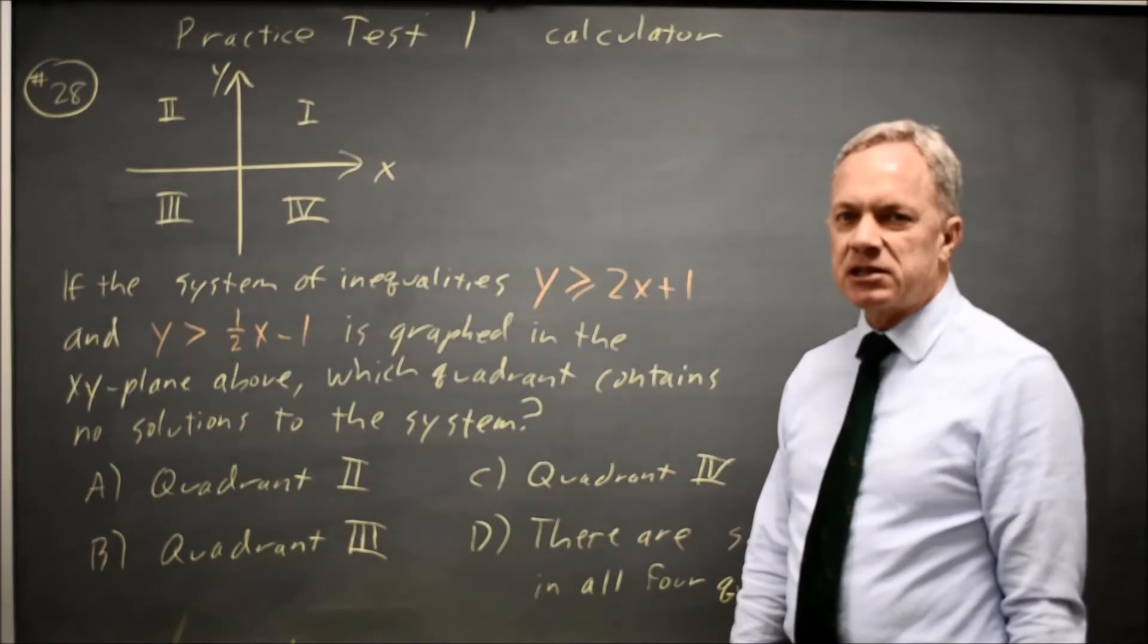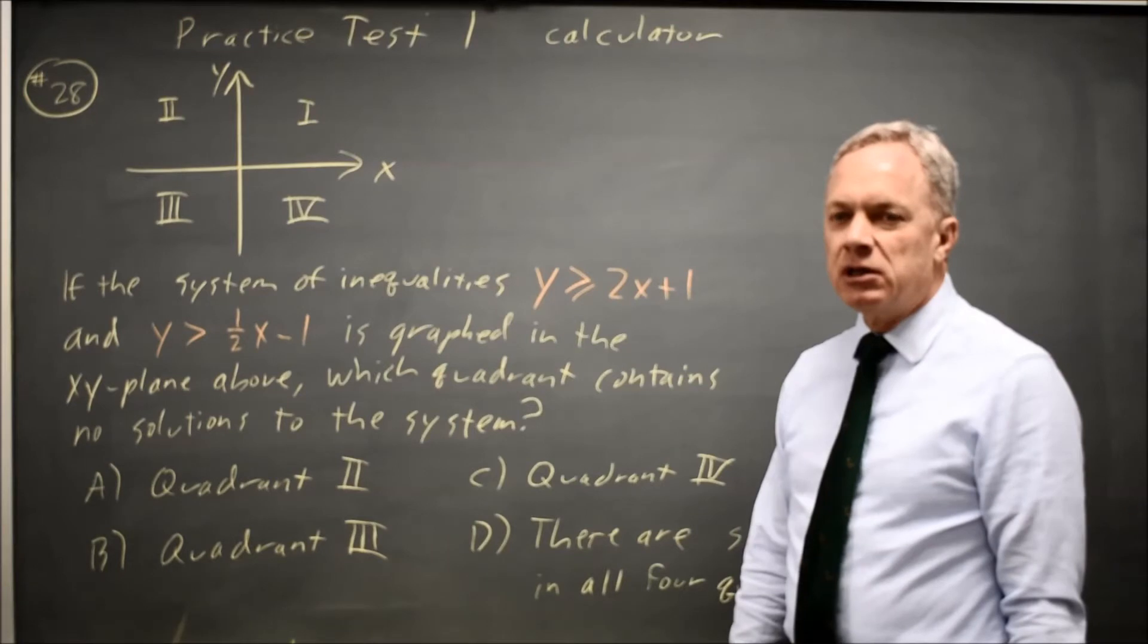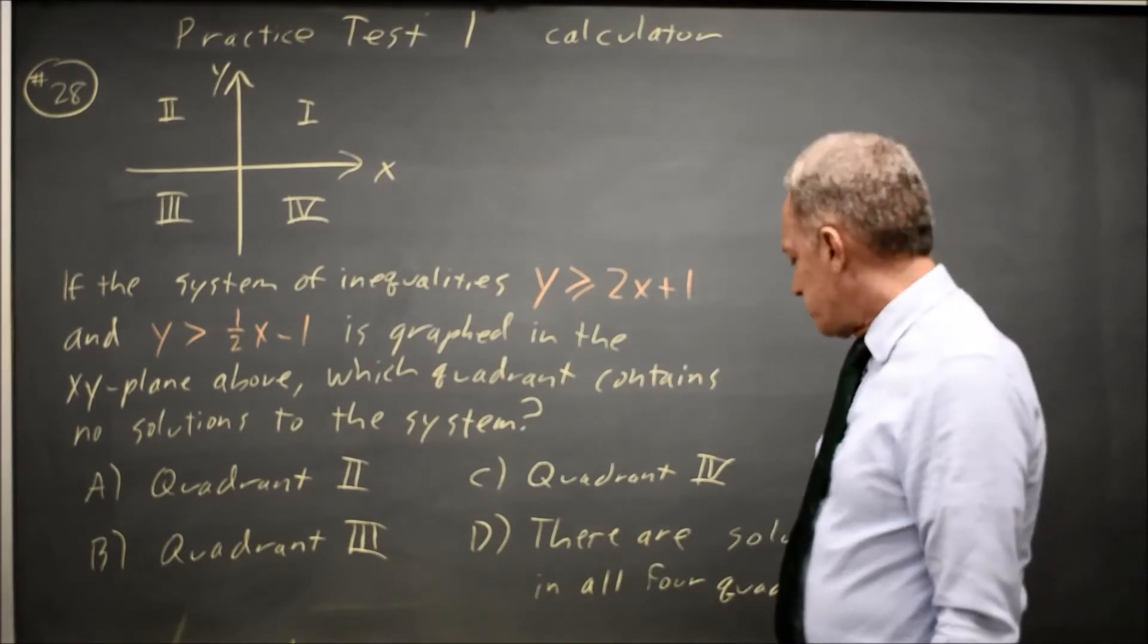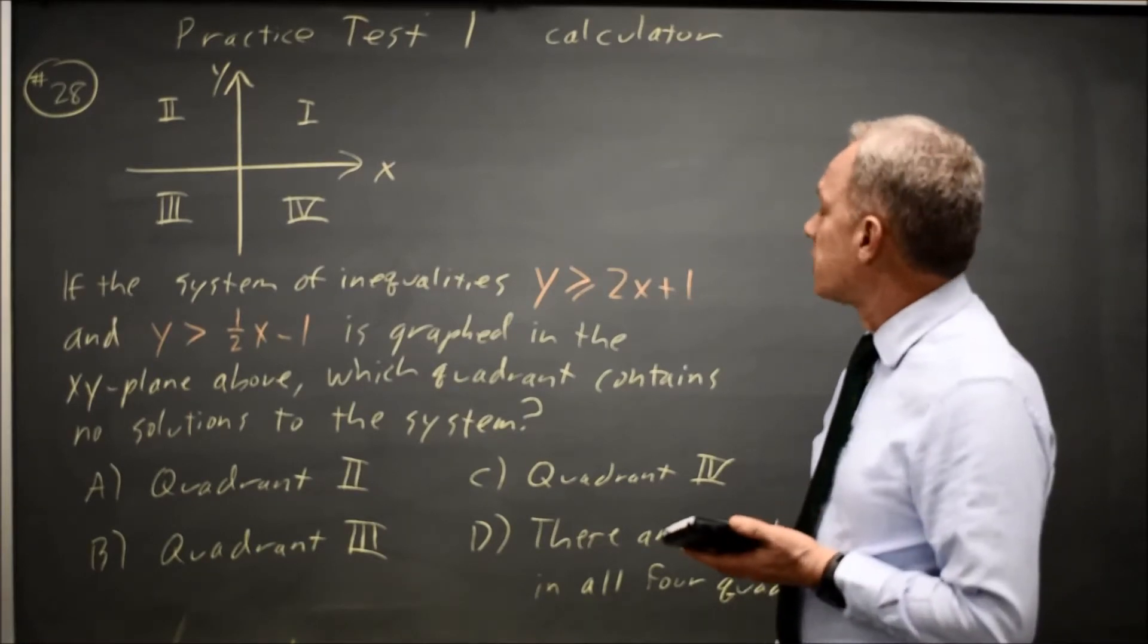College Board typically asks six questions on systems on each SAT, so it's worth being very comfortable with systems. I'm going to graph these by hand, although I can also graph them on the calculator.